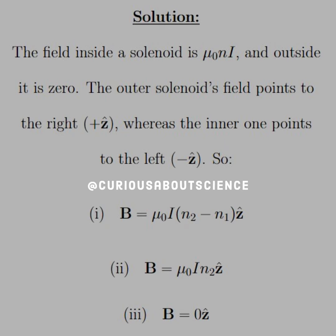We see that the outer solenoid's field points to the right, or in the positive Z direction, whereas the inner one points to the left, the negative Z-hat direction. So for each scenario we can add together their respective field strengths with their directions.